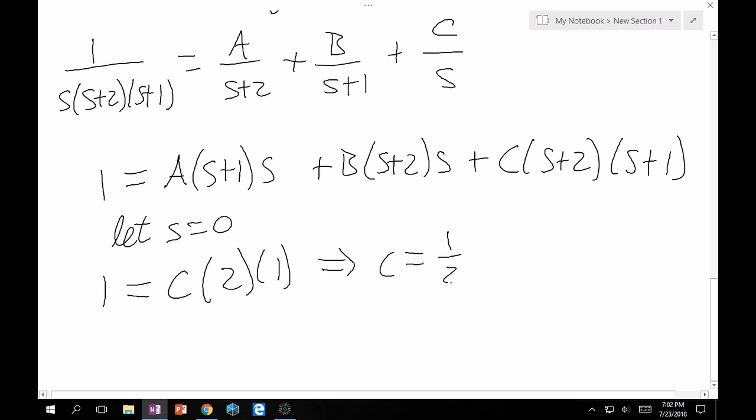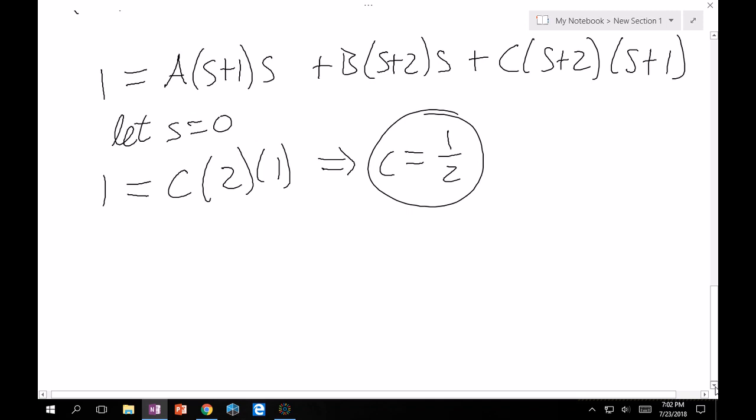We solved for our first constant. We do the same thing. Let s = -1. So the left-hand side is still 1. A goes away, C goes away. What doesn't go away is B. And so, -1 + 2 is 1 times -1, which is just -1. Therefore, B is going to be -1.